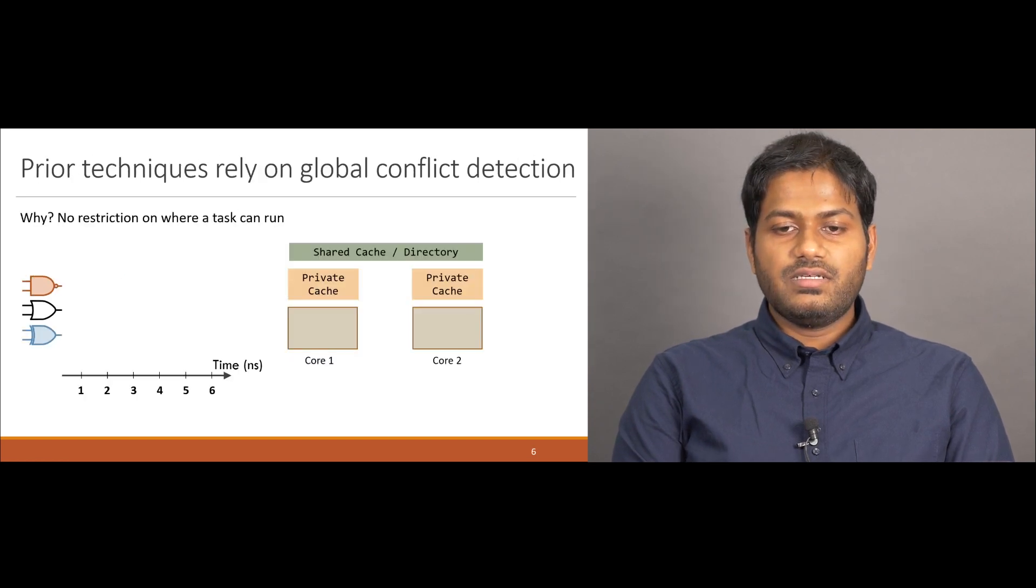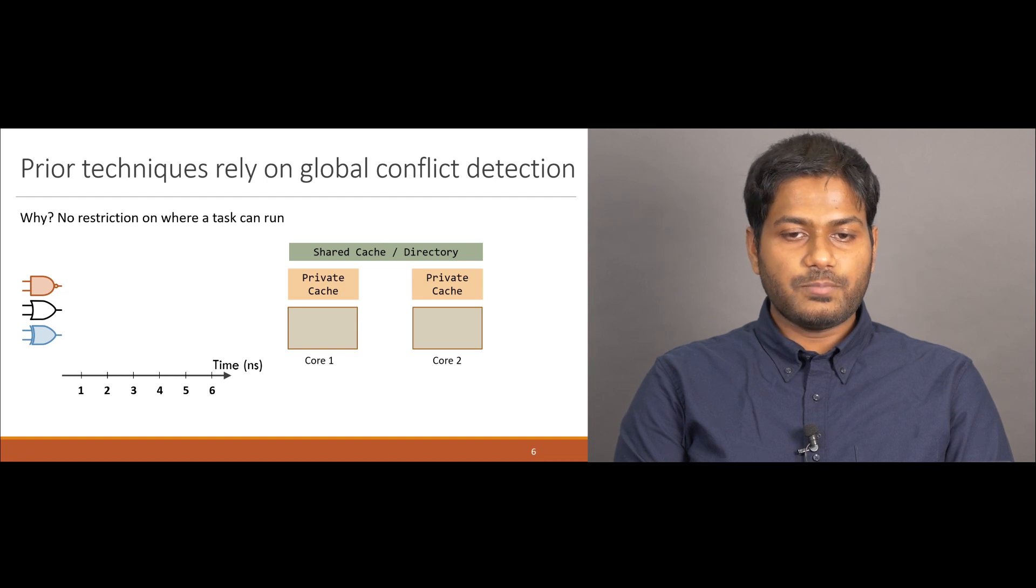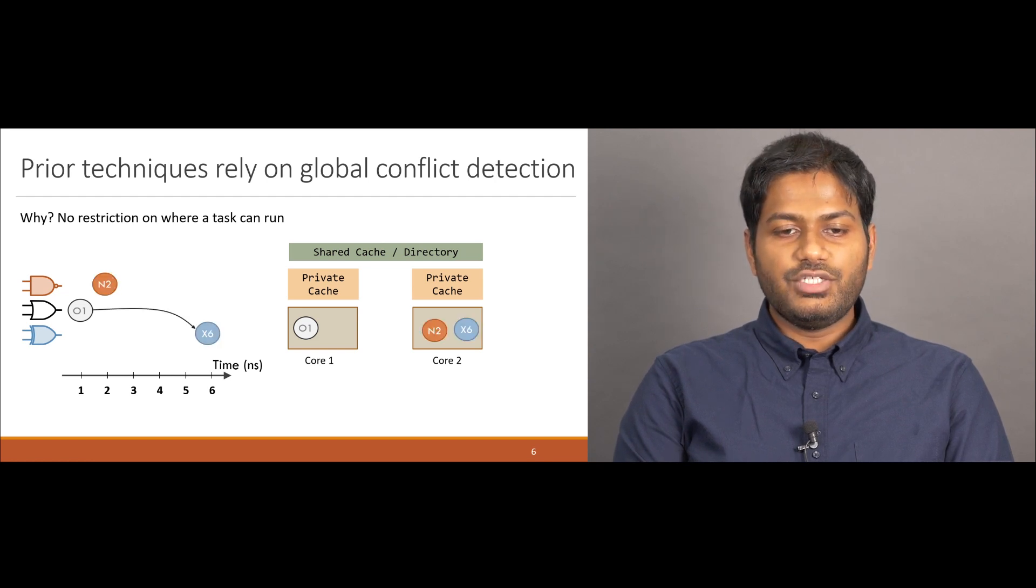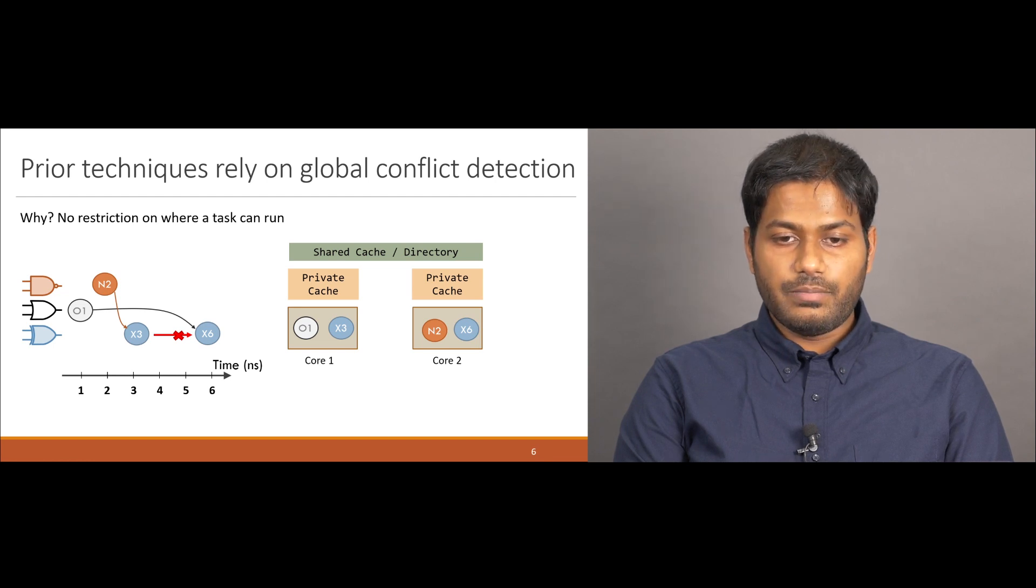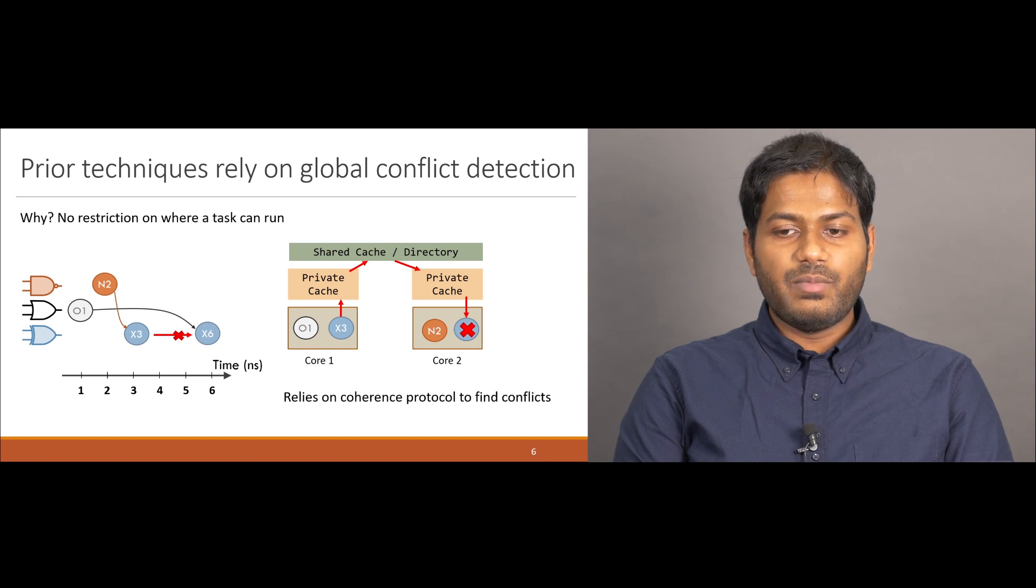Prior systems that performed such speculative execution required global conflict detection. This is because they allowed any task to run at any core. Let's assume a situation where O1 is run at core 1, X6 at core 2, N2 also at core 2, and finally, X3 is starting to run at core 1. Now, X3 needs to find and reboot all tasks which access the same gate but at a higher time. It does so by sending messages throughout the memory system, relying on the coherence protocol to find other tasks which access the same data.